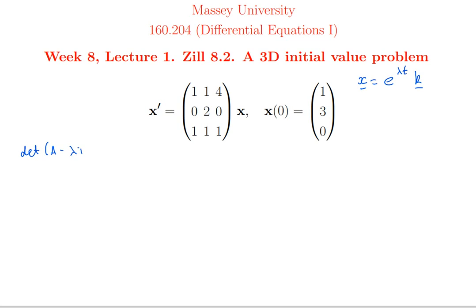A minus λI just means to subtract λ from the diagonal, taking care to copy out the rest of the matrix with no change. So there is A minus λI, and I need to take the determinant of this three-by-three matrix.